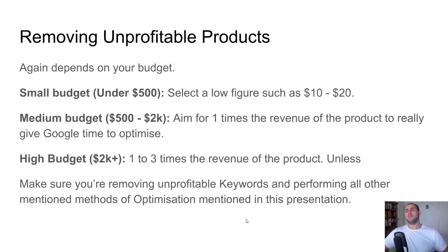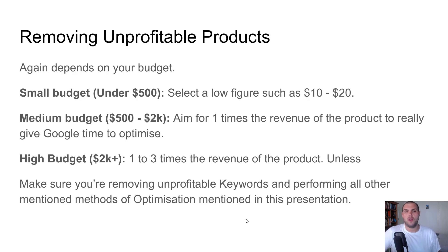For a small budget under $500, select the low figure — like $10 or $20 spent on a product — keeping in mind you're limiting the data you collect. Remove the product entirely and exclude it from your campaign. For a medium budget, aim for one times the revenue the product brings in to give Google more time to optimize. Ideally you want a couple hundred clicks — 200 to 300 clicks — to really know whether something has legs. Check your bounce rate, load speed, and make all the other store improvements before cutting a product entirely.